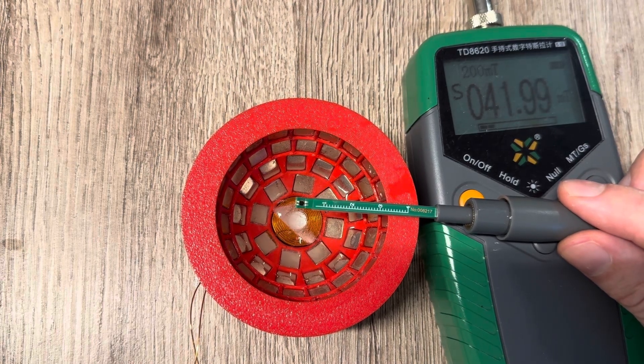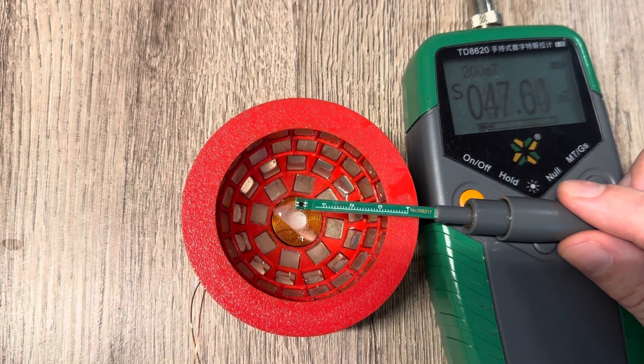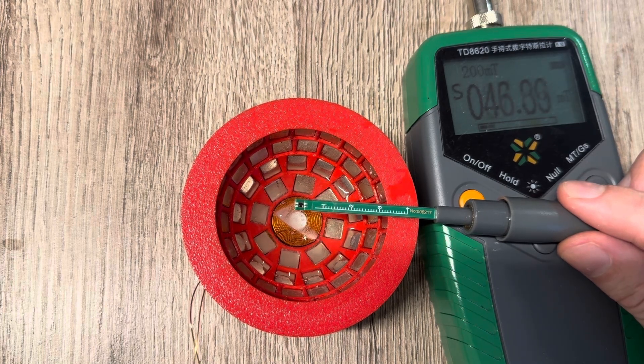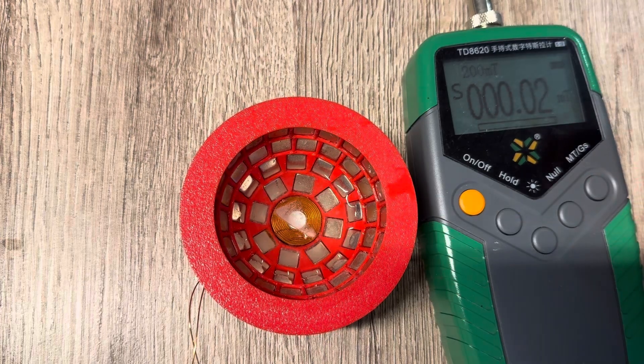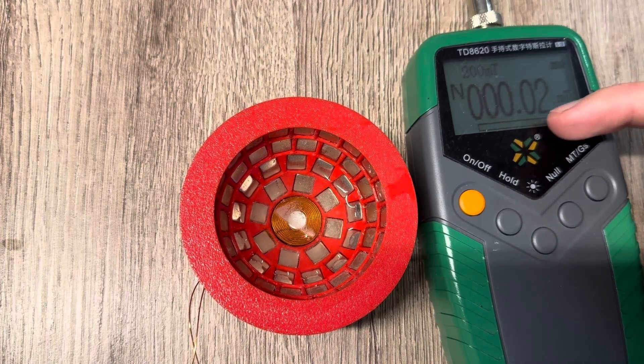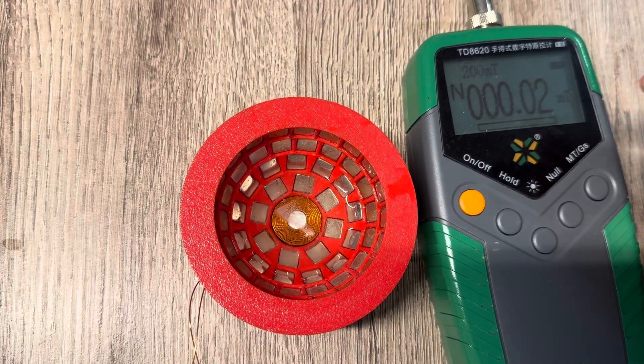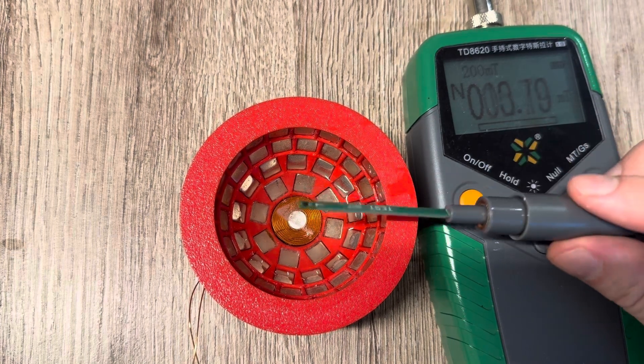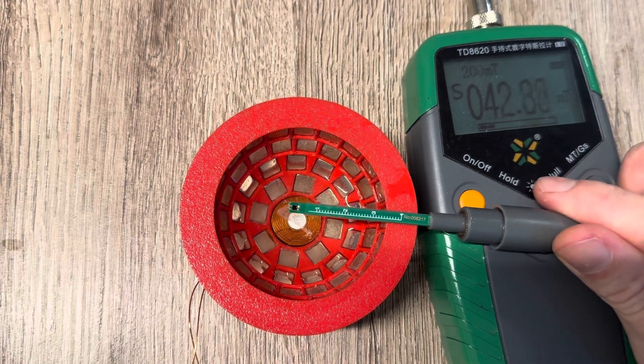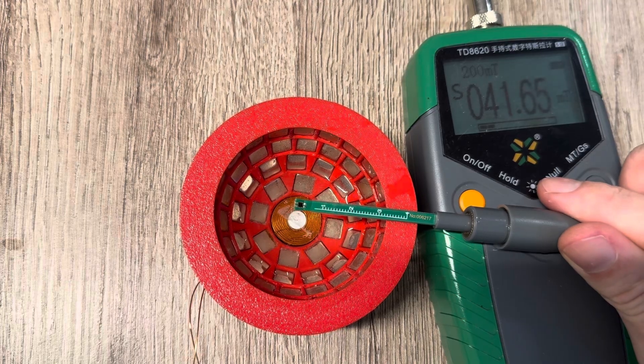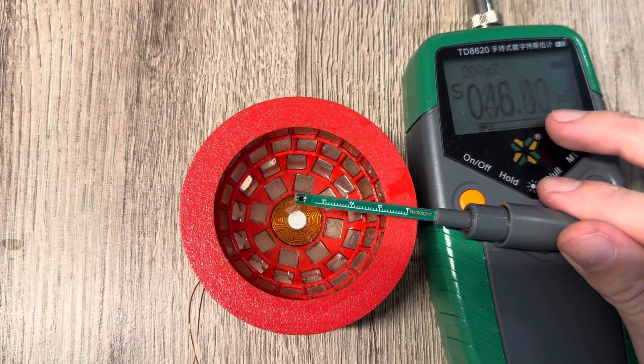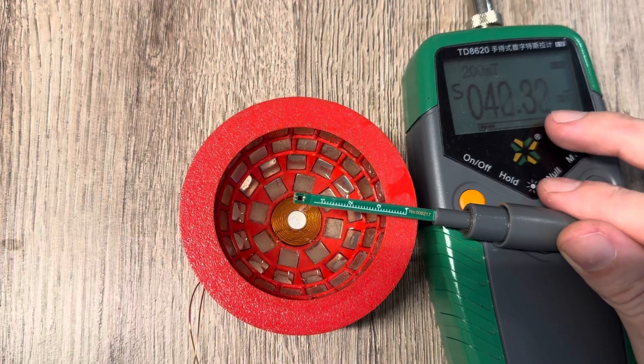I'll just place it to the center here. You can see we have around 40 millitesla, and if I turn it on again, you can see the values changing. Of course this gauss meter is not for AC currents, it's for DC fields, but still I've turned down the frequency so low, like currently when I turn it on again it's at 4 hertz. The change in the field strength is noted with the gauss meter.